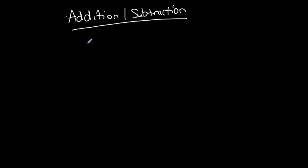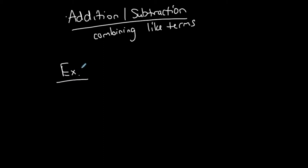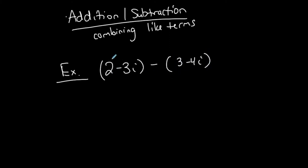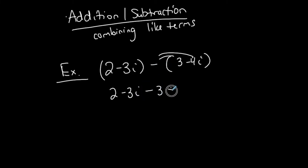Addition and subtraction go hand in hand. It's very similar to just combining like terms. I'm not even going to do addition — I'll just do an example of subtraction, because addition is even easier. Let's say I have two complex numbers that I'm subtracting: (2 - 3i) minus (3 - 4i). The reason I'm doing subtraction is because the negative in front is going to distribute — that's the only difference. So I'll show my work: it distributes to become negative 3 and positive 4i.